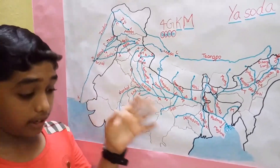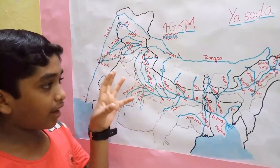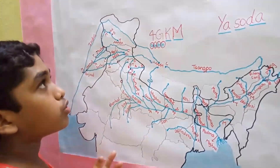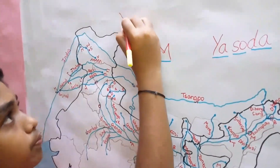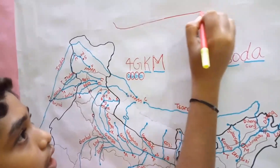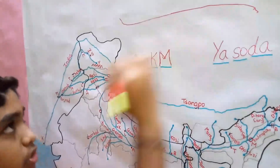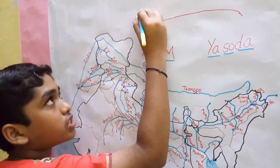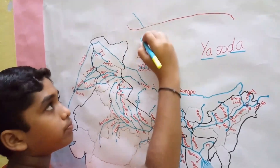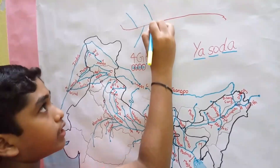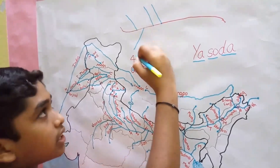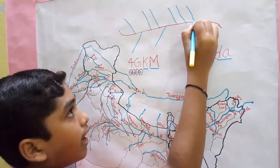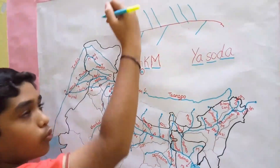Now let us see a trick for the location of the tributaries of Ganga. We assume this line as the Ganga. Coming from the source, we find first one left bank tributary, then one right bank tributary, then two left bank tributaries, then one right bank tributary, then three left bank tributaries, and then one right bank tributary. So the pattern is: 1, 1, 2, 1, 3, 1.